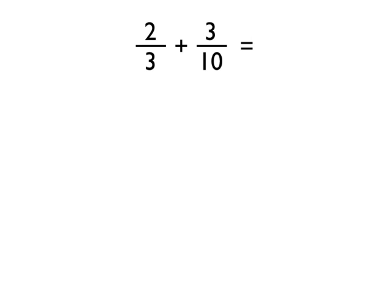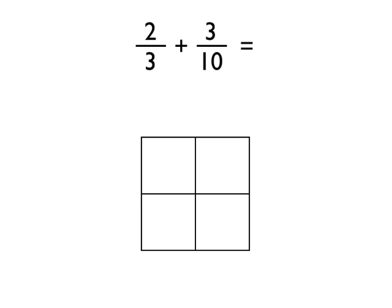So let's have a look at adding fractions using this method. If we've got 2 thirds add 3 tenths, the first thing you do is you draw yourself a 2 by 2 square, like I've got here. The next thing you do is that you split your first fraction up. So I've got 2 thirds. I take the 2 and the 3, split them up, and I write them above the squares, as I've done here.